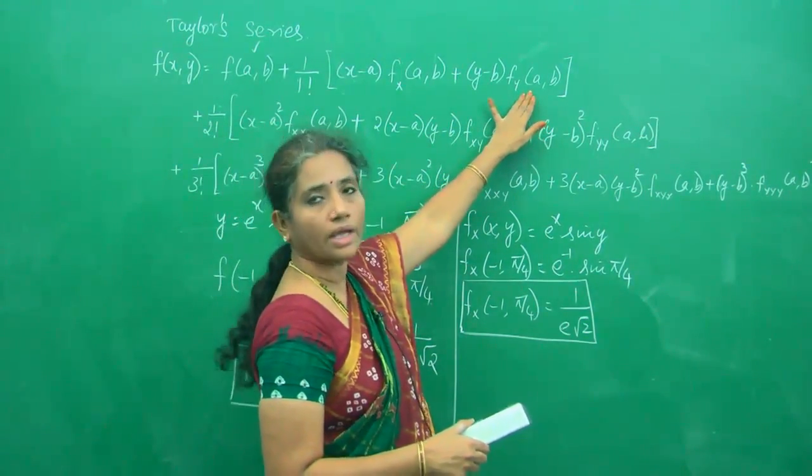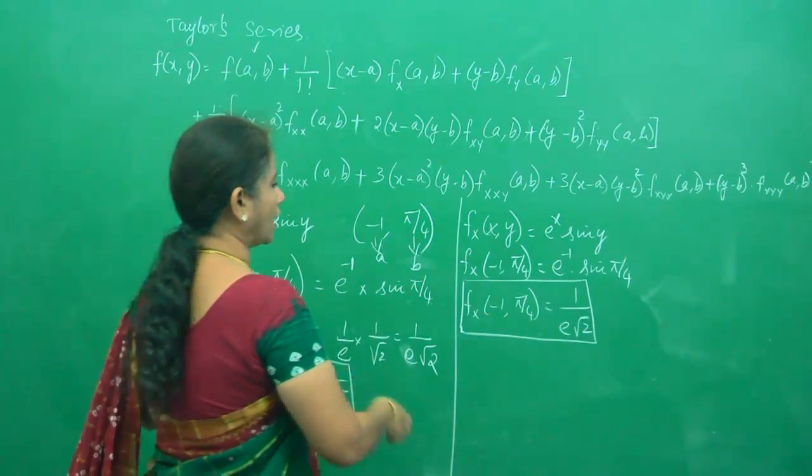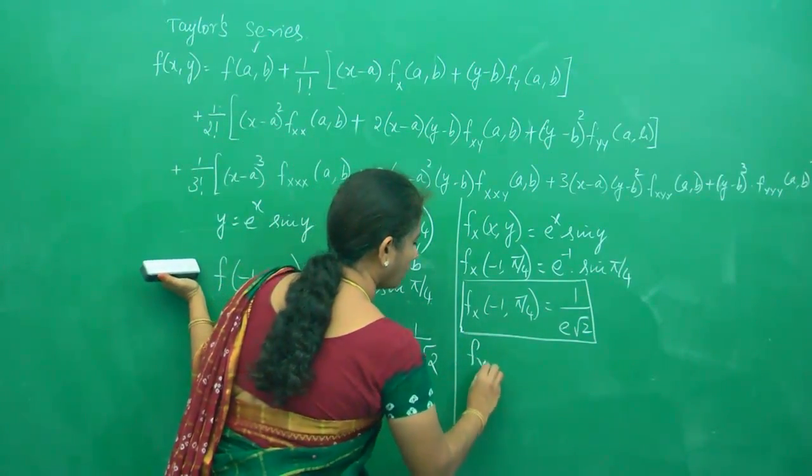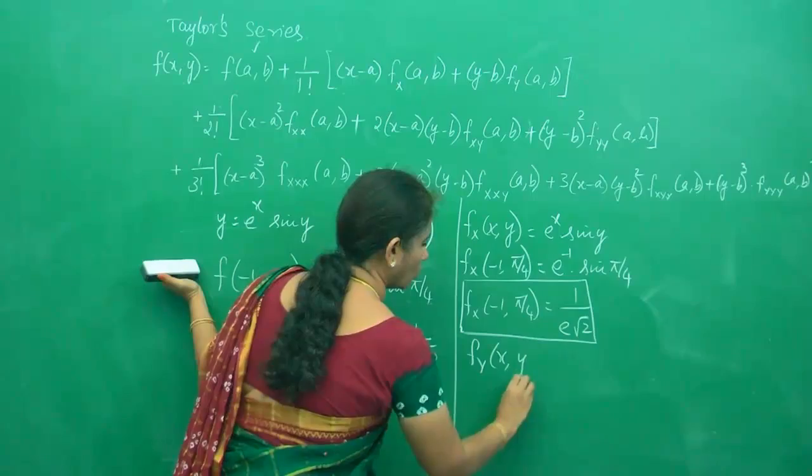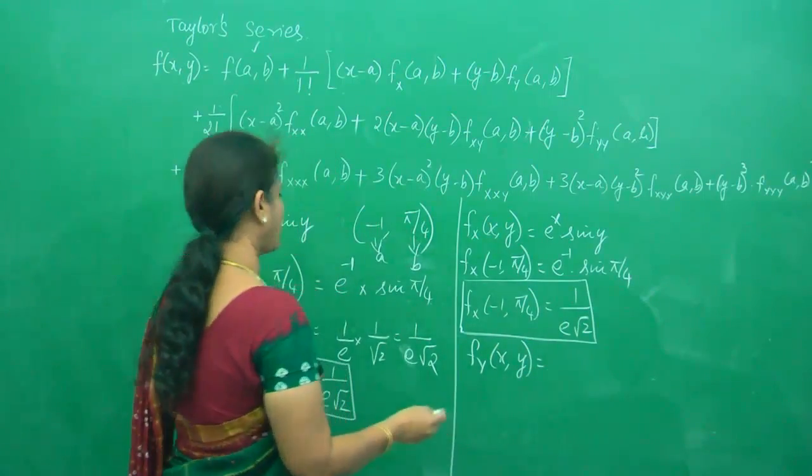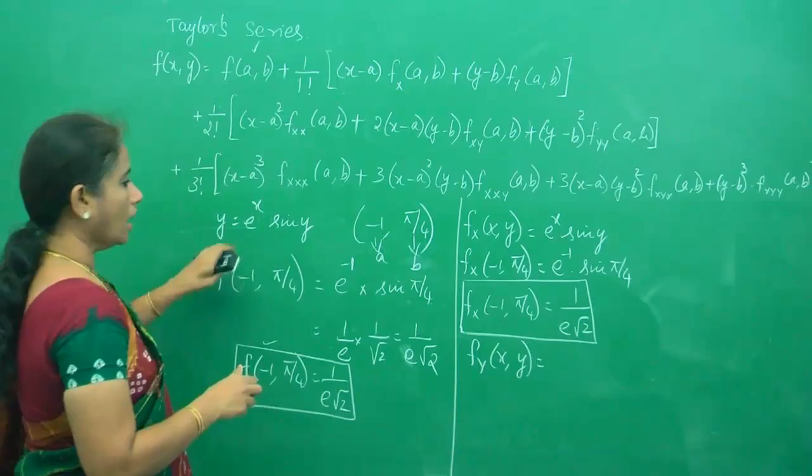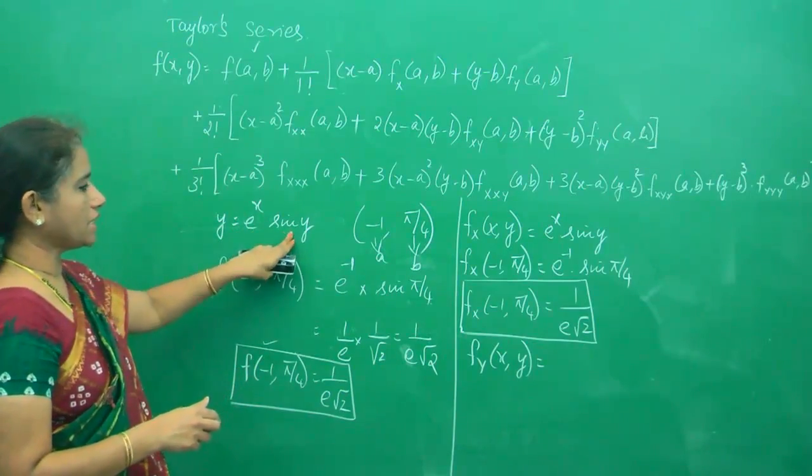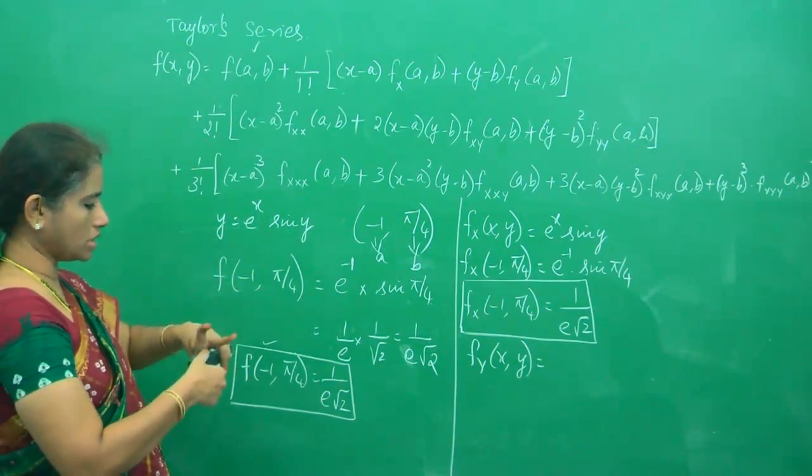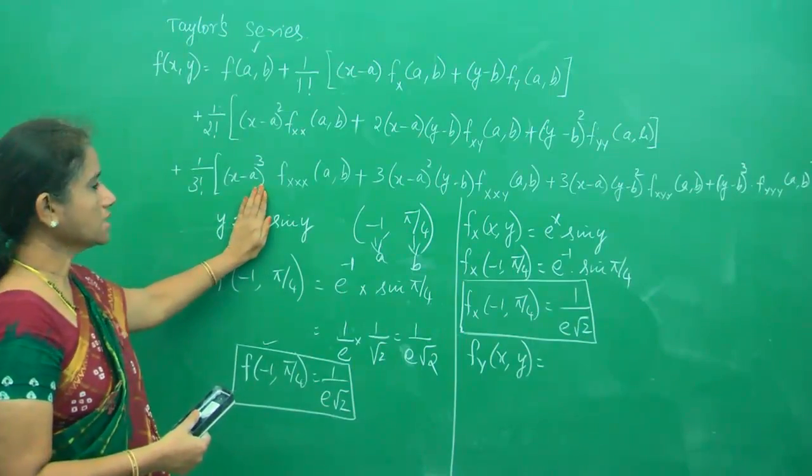Now let us do f_y(a,b). For that, I need to calculate f_y(x,y). Take this function. We are going to differentiate with respect to y, so e^x is constant now.